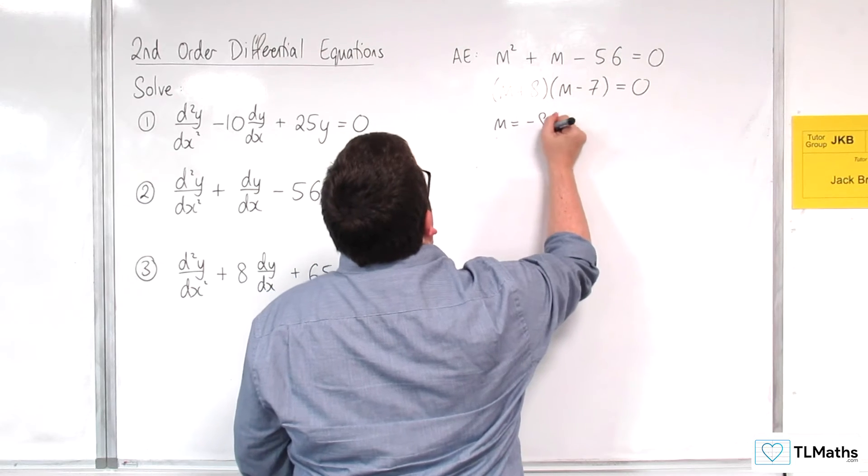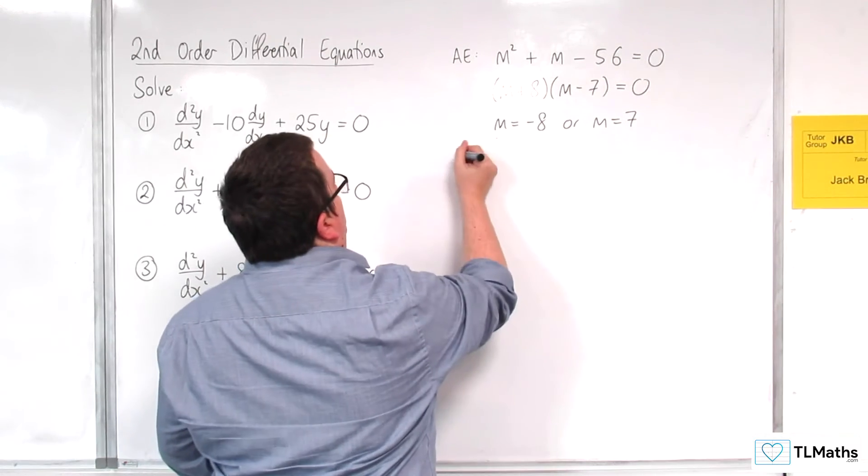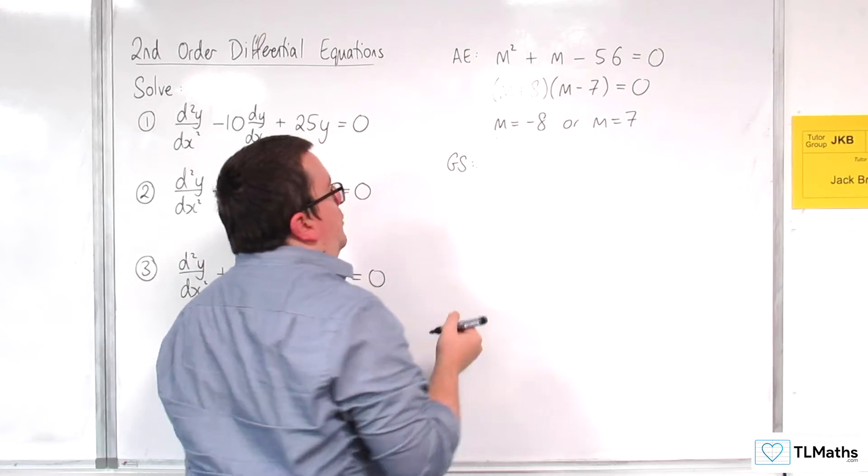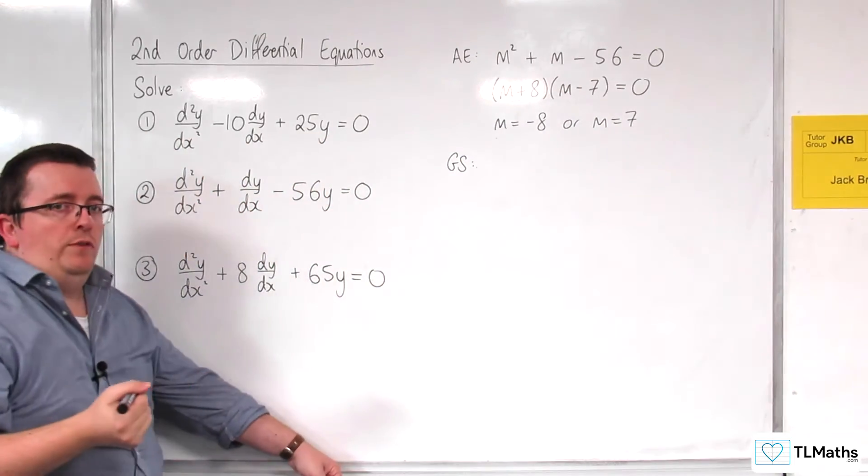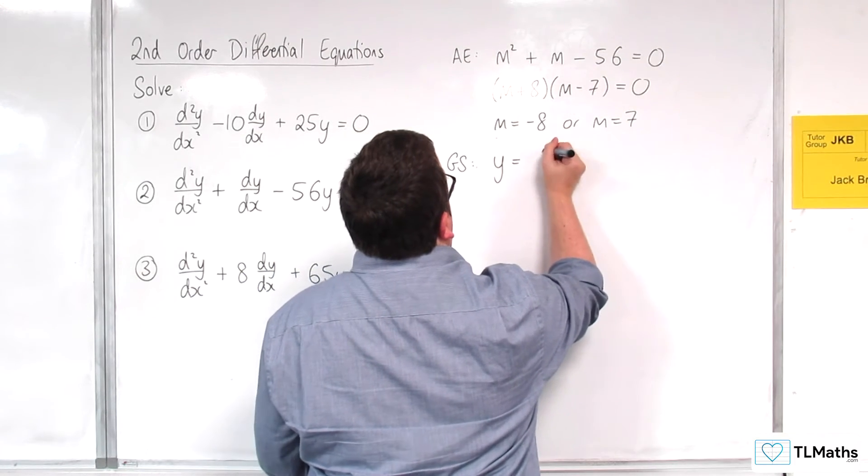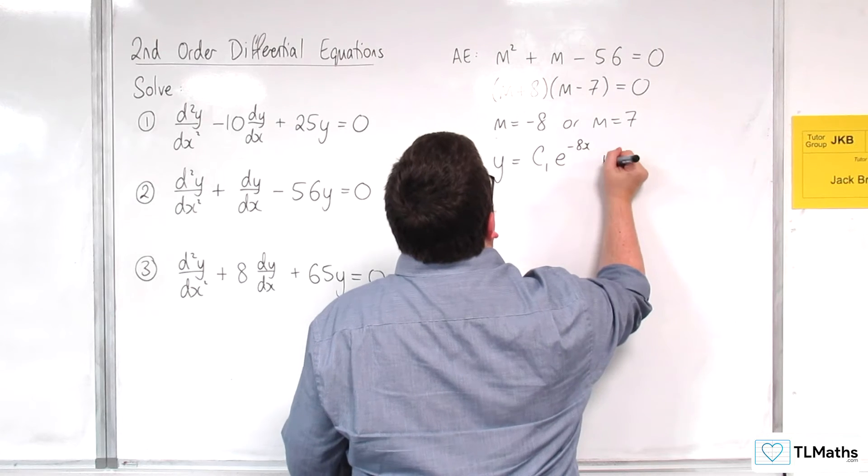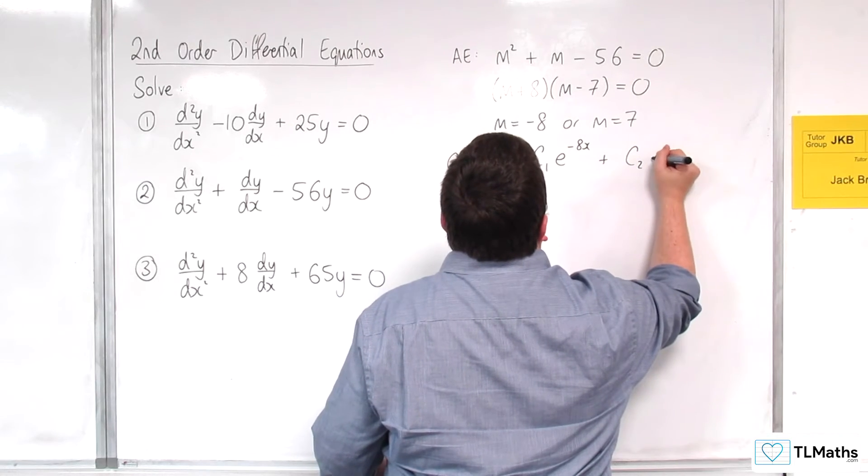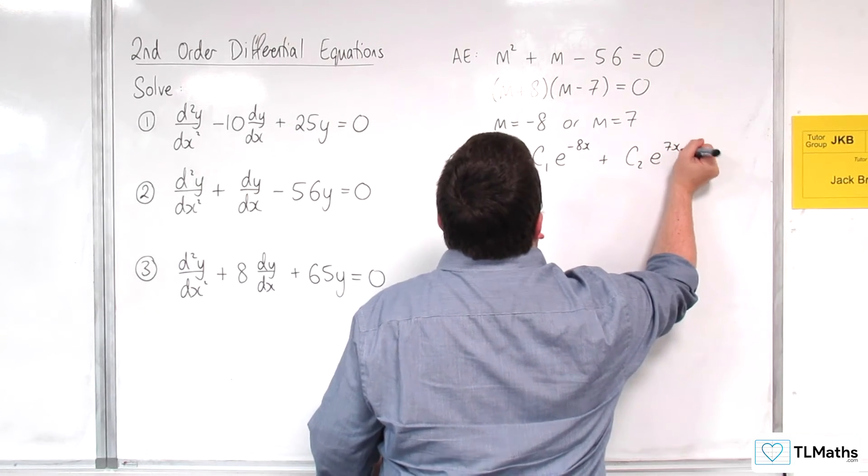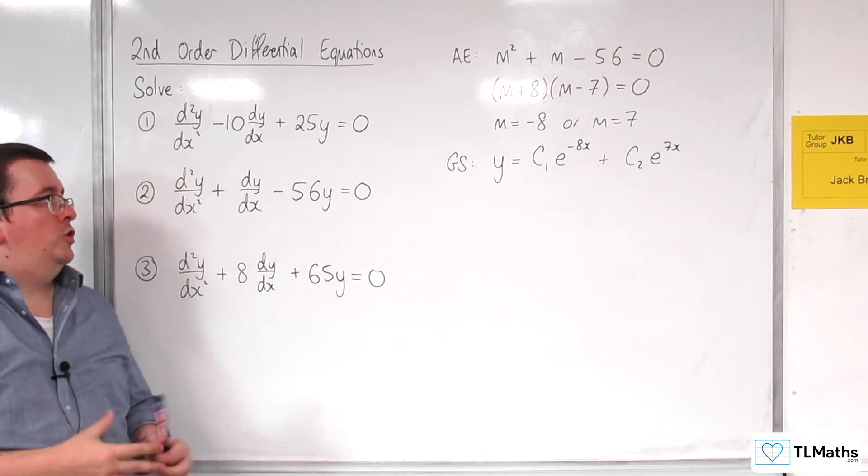So m is equal to -8 or m is equal to 7. So the general solution, because we've got two real distinct roots, would be y = c₁e^(-8x) + c₂e^(7x). And so that is my general solution for question number 2.